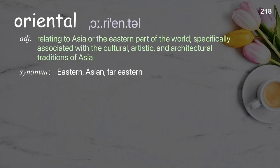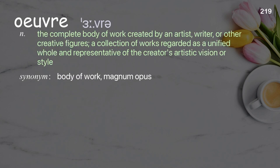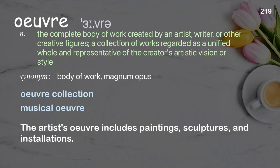Oriental: relating to Asia or the eastern part of the world; specifically associated with the cultural, artistic, and architectural traditions of Asia. The oriental cuisine at this restaurant is delicious. Oeuvre: a collection of works regarded as a unified whole and representative of the creator's artistic vision or style. The artist's oeuvre includes paintings, sculptures, and installations.